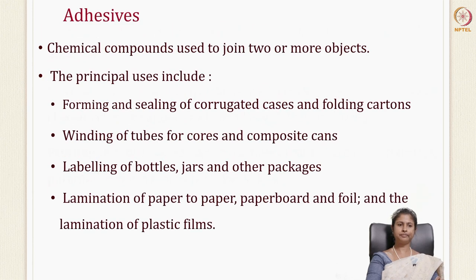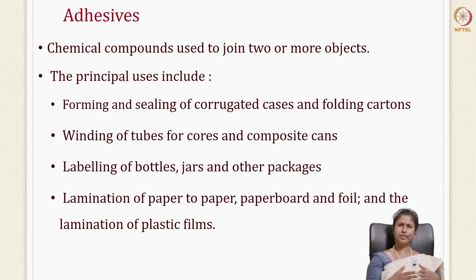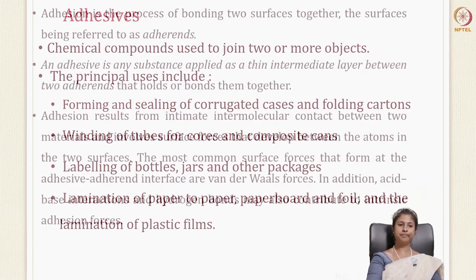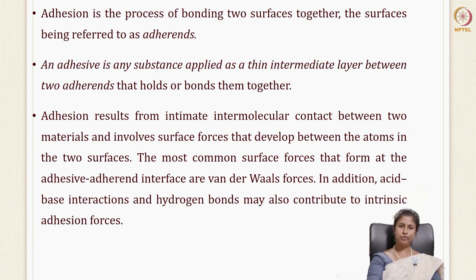We'll start with adhesives, which is an important ancillary material. Adhesives are chemical compounds that join two materials or objects together. Their functions include forming and sealing corrugated cases and folding cartons, winding of tubes in cores and composite cans, labeling in bottles, jars, and packages, and lamination — joining together different packaging materials. Adhesion is a process of bonding two material surfaces together, and the surfaces are usually referred to as adherents.